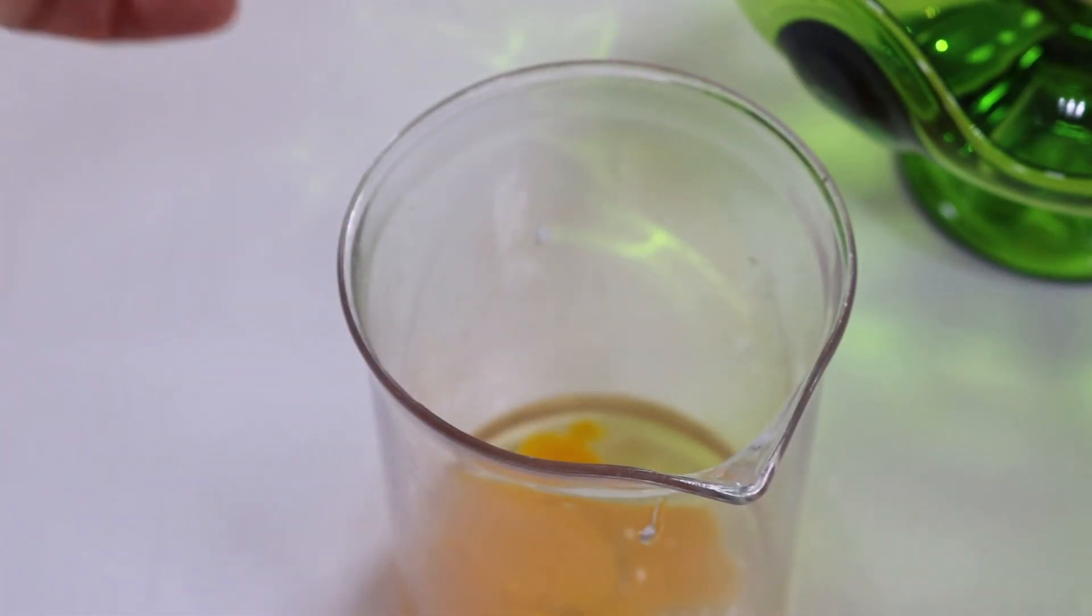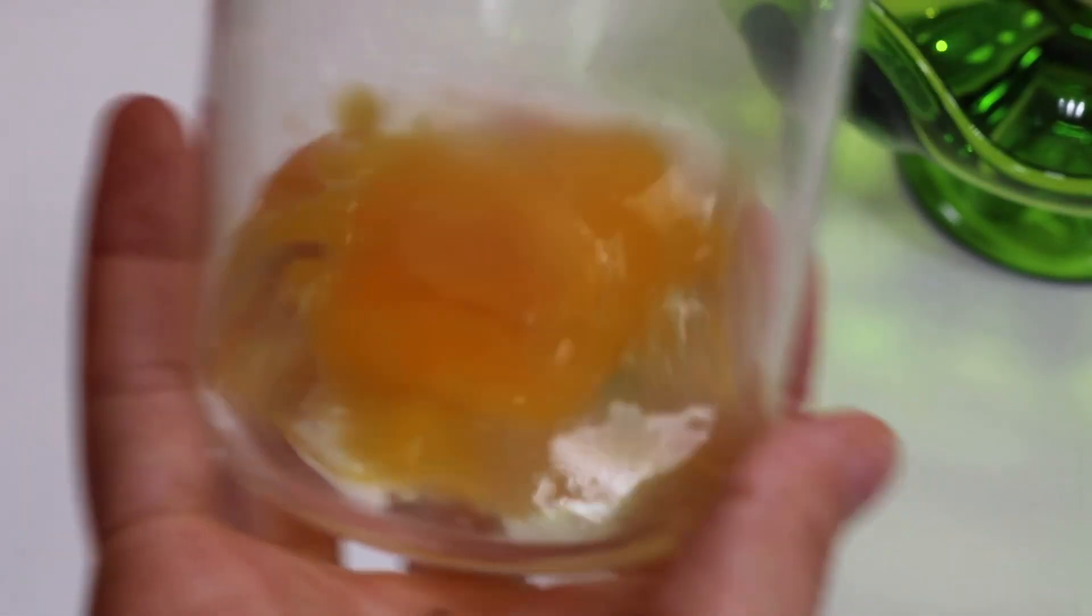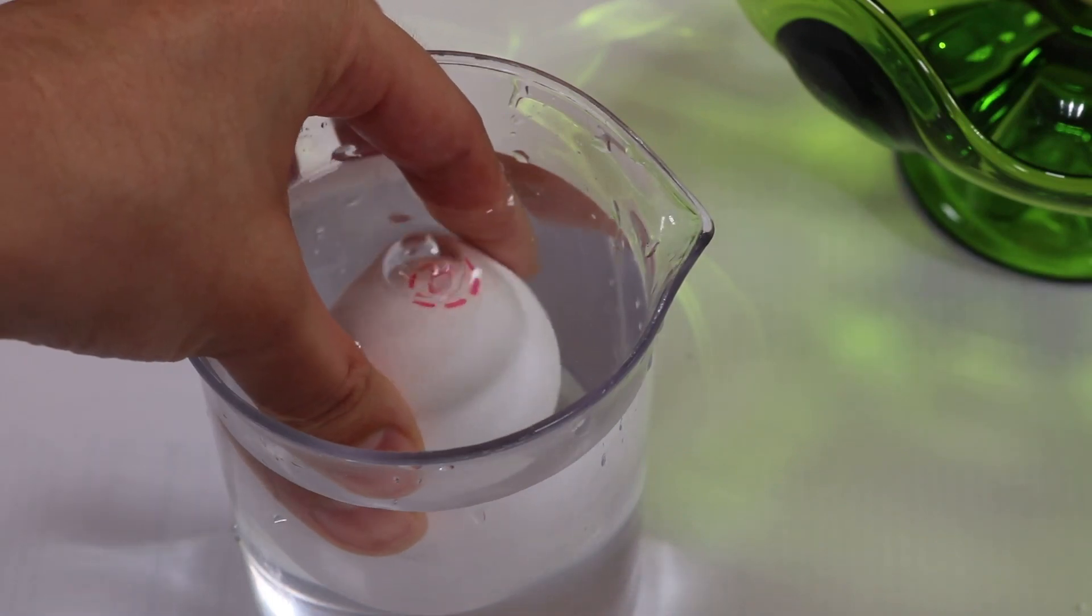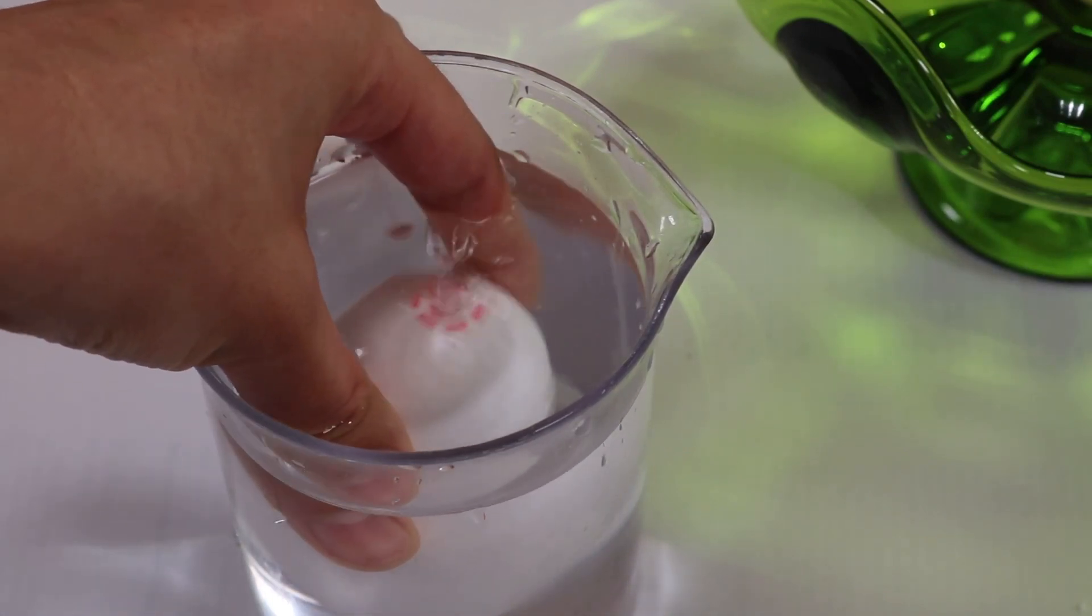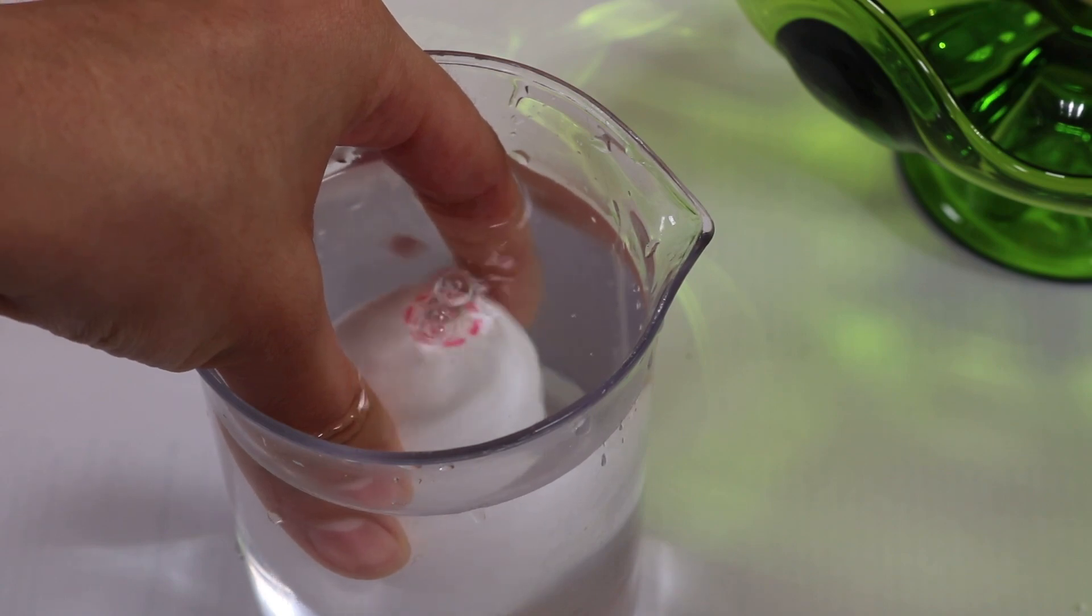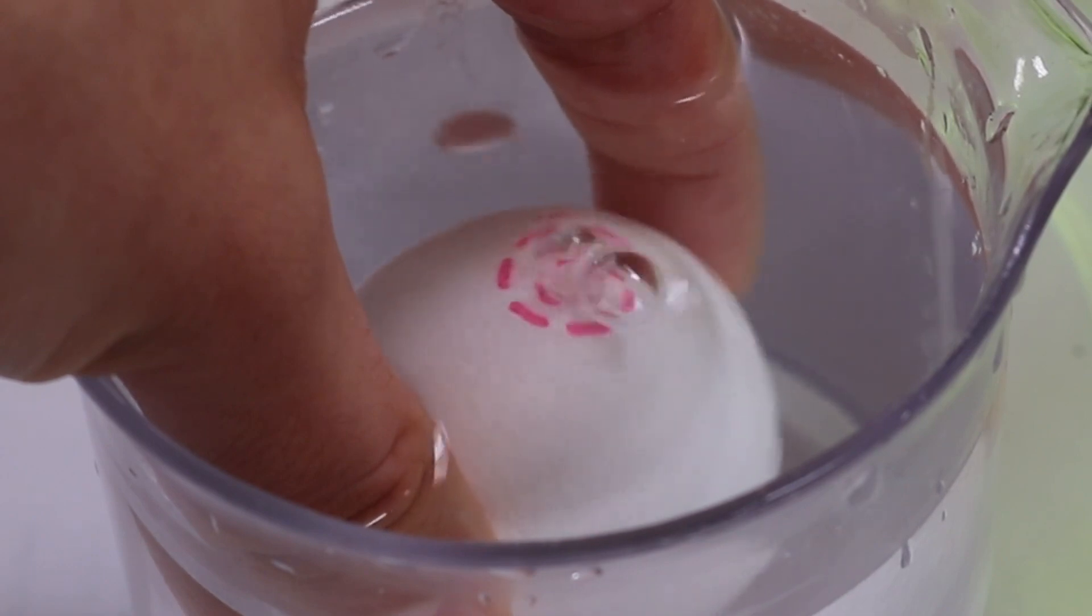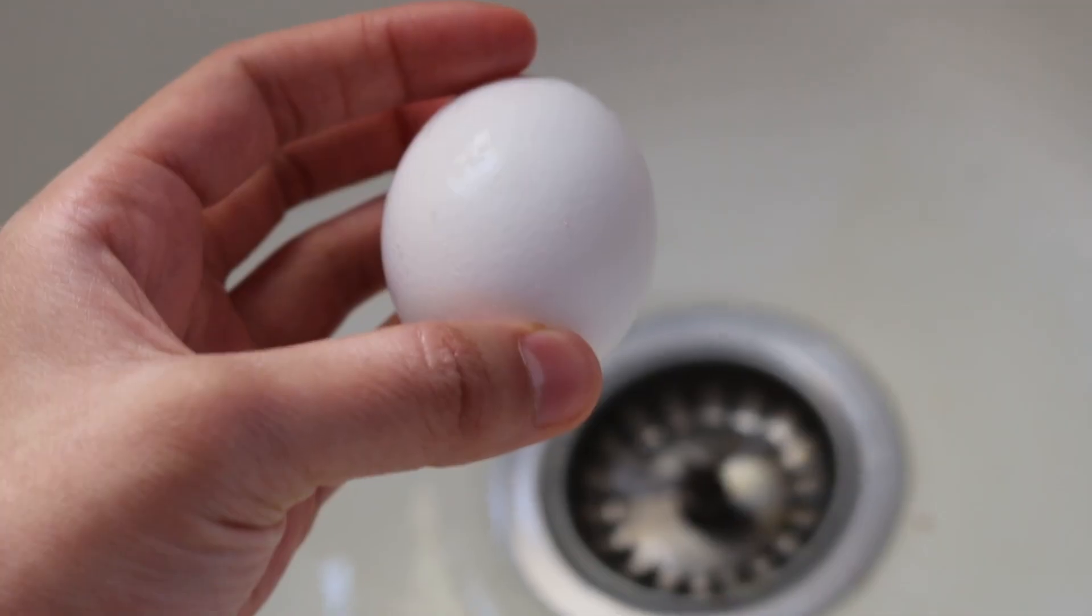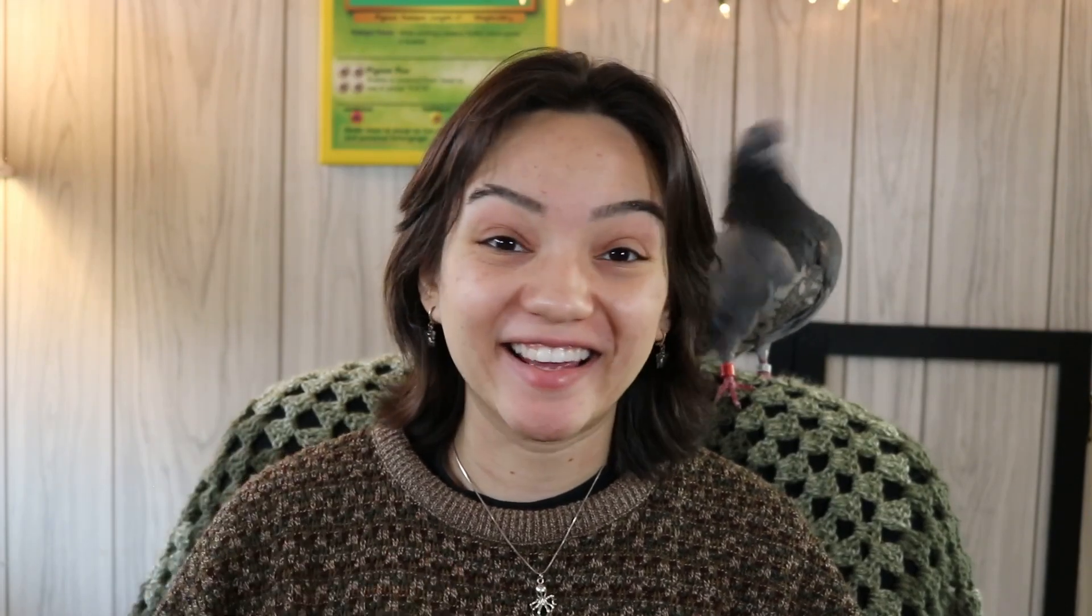Once you've blown all the insides out or at least as much as you can put your egg aside and then discard the egg guts. You'll want to clean out or just get a new device to hold some water in it and then you'll want to submerge your egg in the water. If your hole is big enough air bubbles should pop out of the top of your egg. That'll be a sign that water is actually going into your egg. You'll want to do this until the bubbles stop and then you'll want to take the water out of the egg. The best process that I found is just shaking it rapidly.